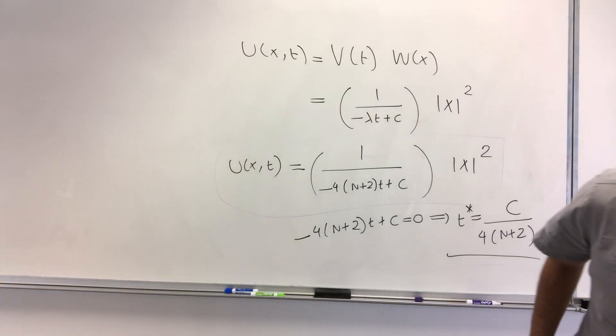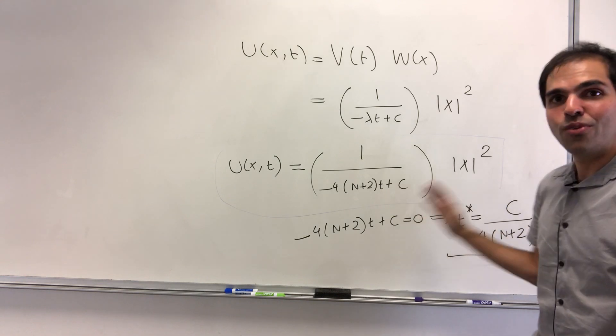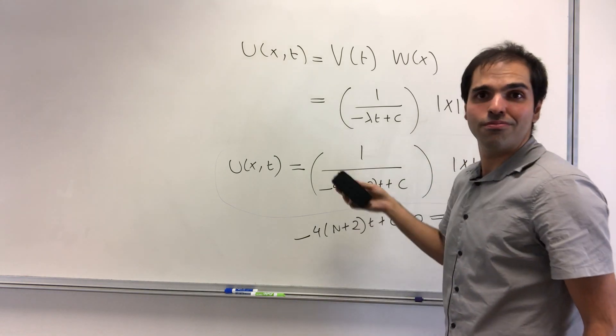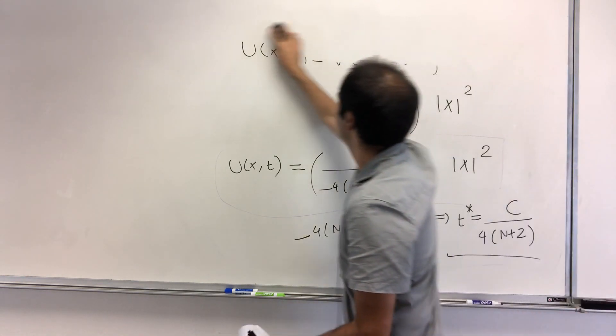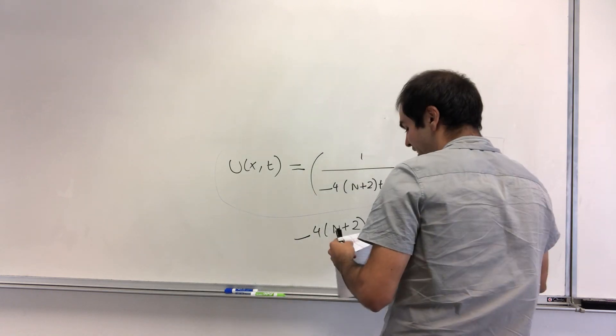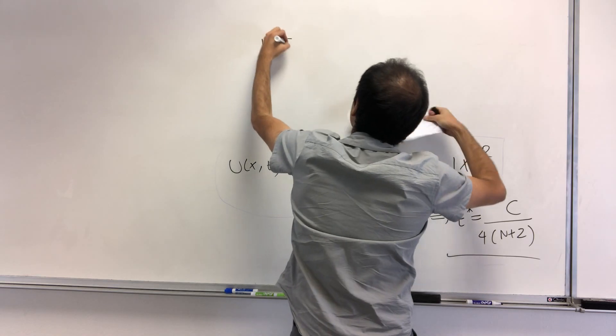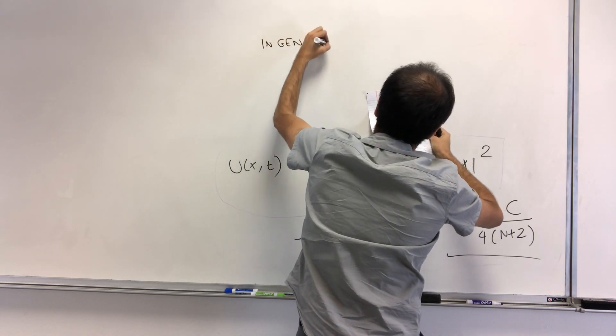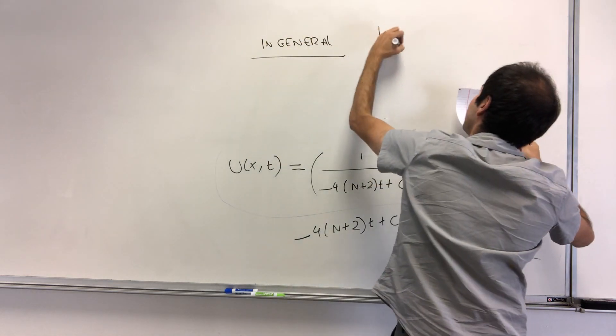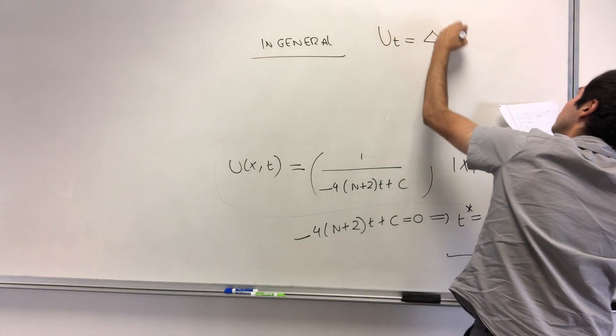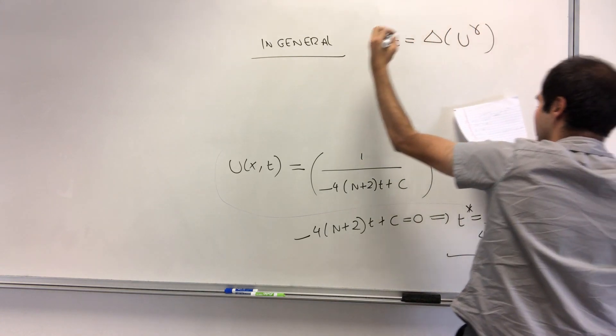All right. Last but not least, here I did it with gamma equals 2. In case you're curious, what is the solution with gamma in general? So in general, if you actually have the porous medium equation, ut equals Laplacian of u to the gamma, then we do get the following.